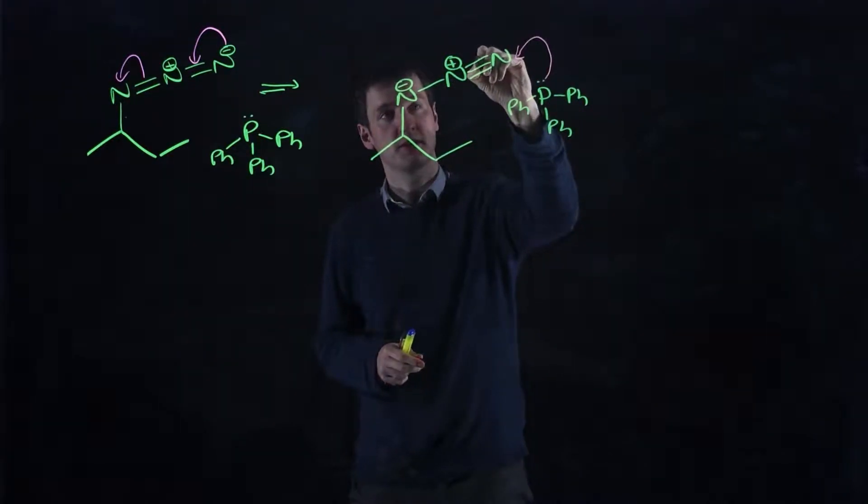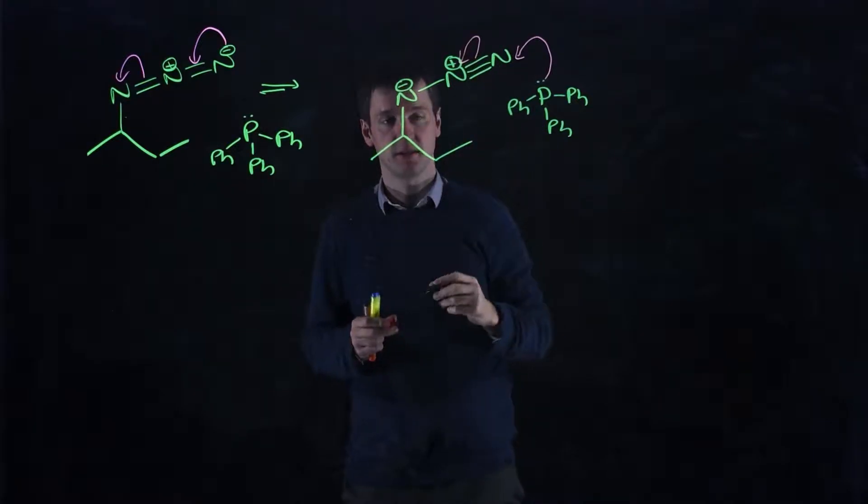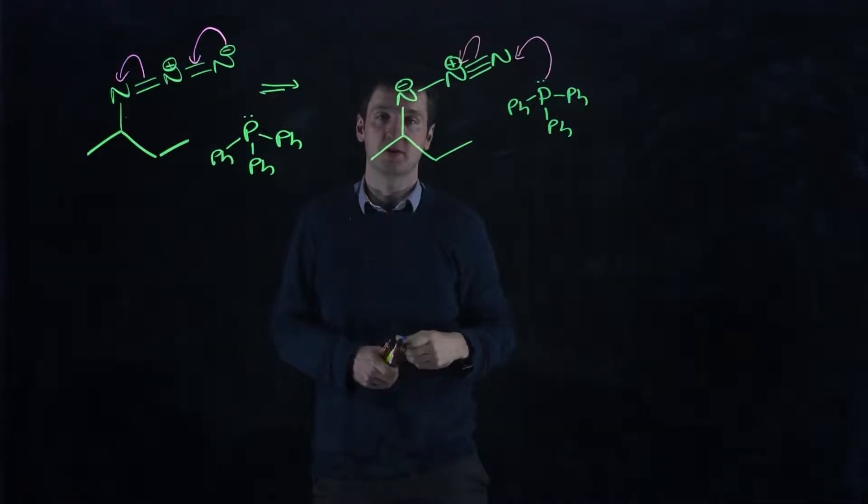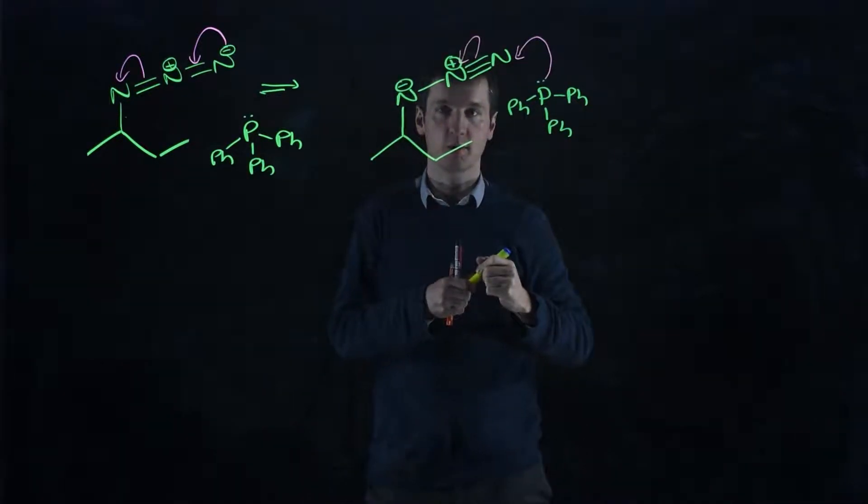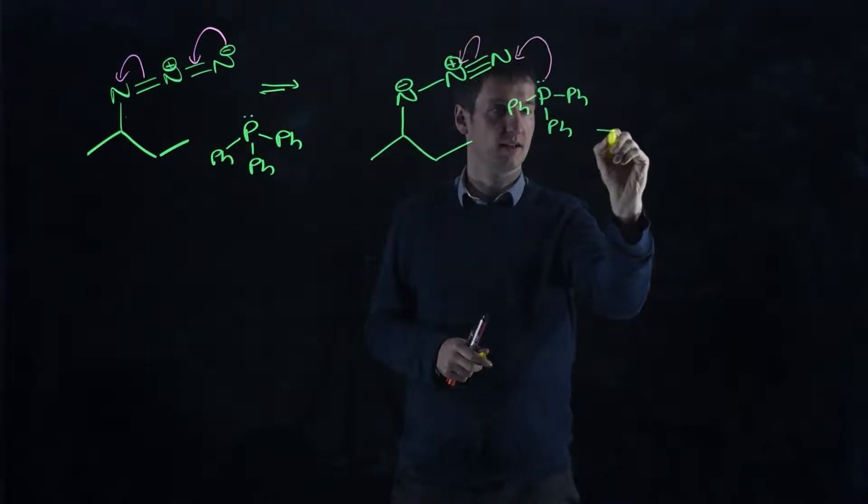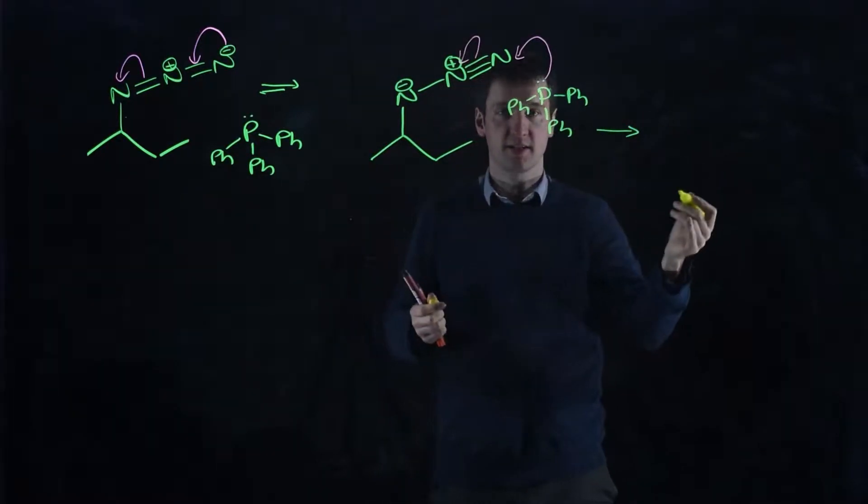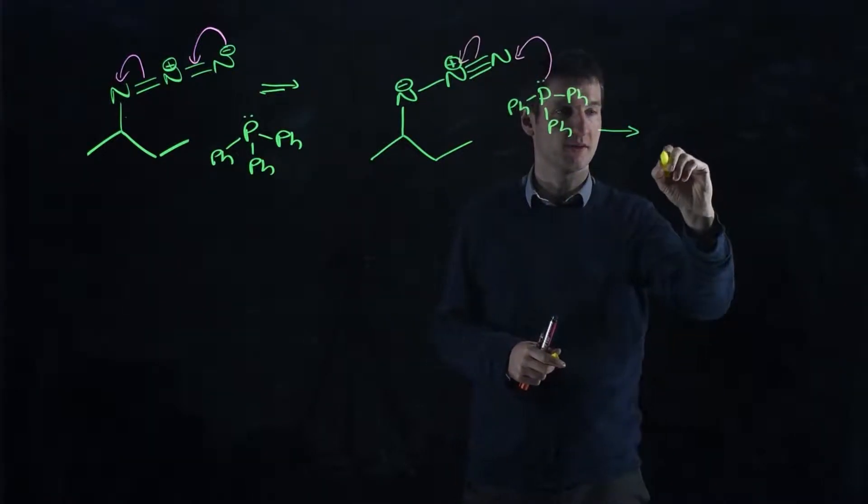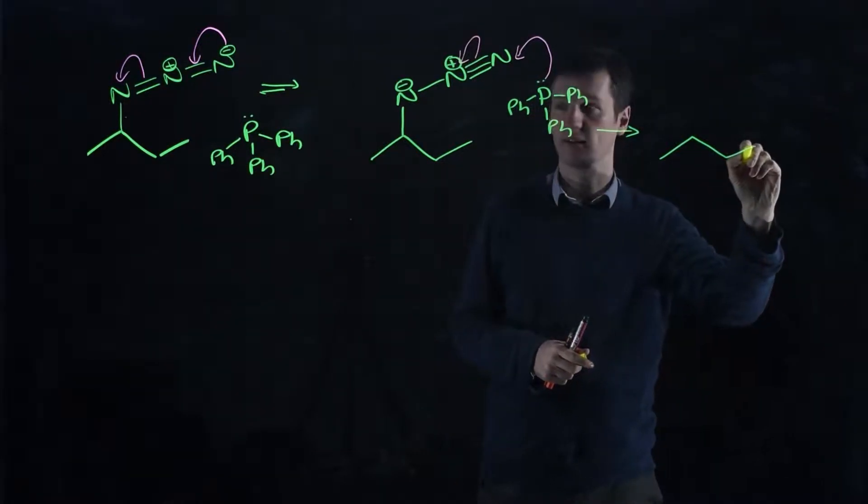Nucleophile forms a new phosphorus-nitrogen bond, break the nitrogen-nitrogen triple bond, or one of the triple bonds. What have we got then? Well, everything that's here has to be there, unless there's an arrow going from it or to it. So that's all there.